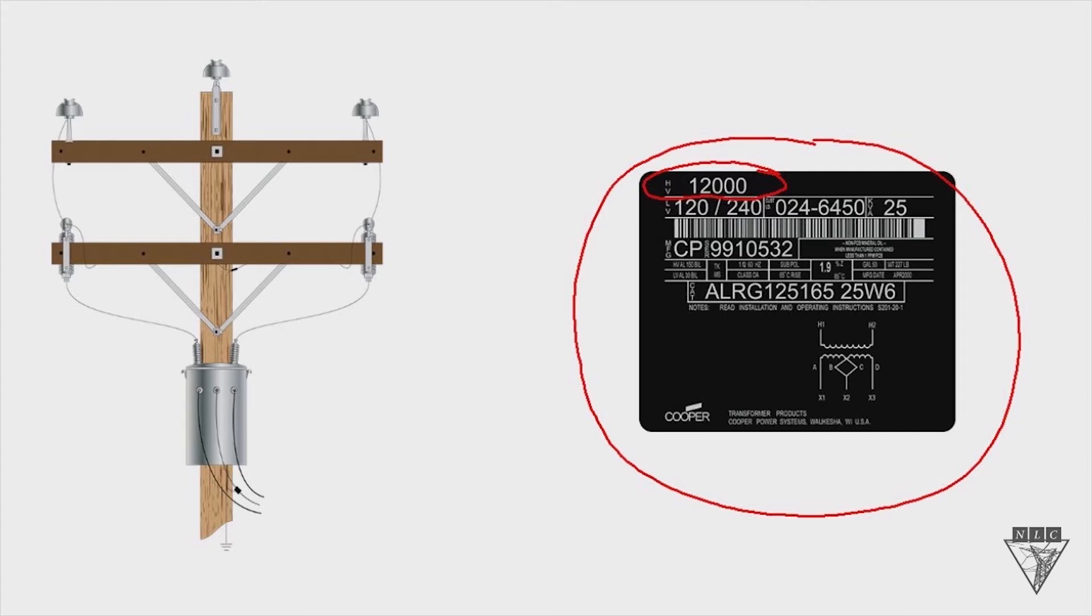If there's only one number on the high voltage rating, then it's going to be a phase-to-phase connection. So over here on the left on our structure, it would be a phase-to-phase connection, and you would need it to have 12,000 volts in order to get the proper secondary voltage out of your transformer.